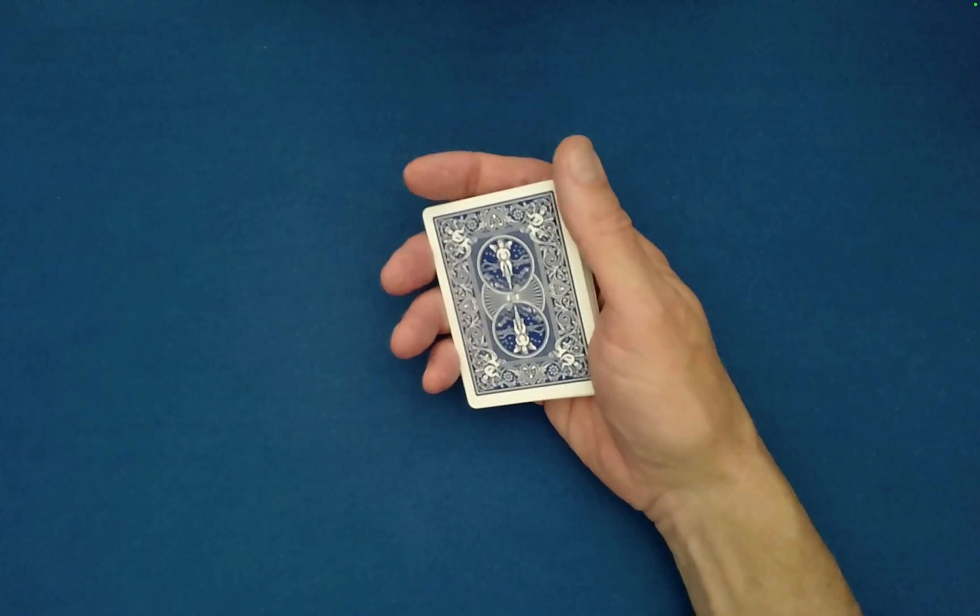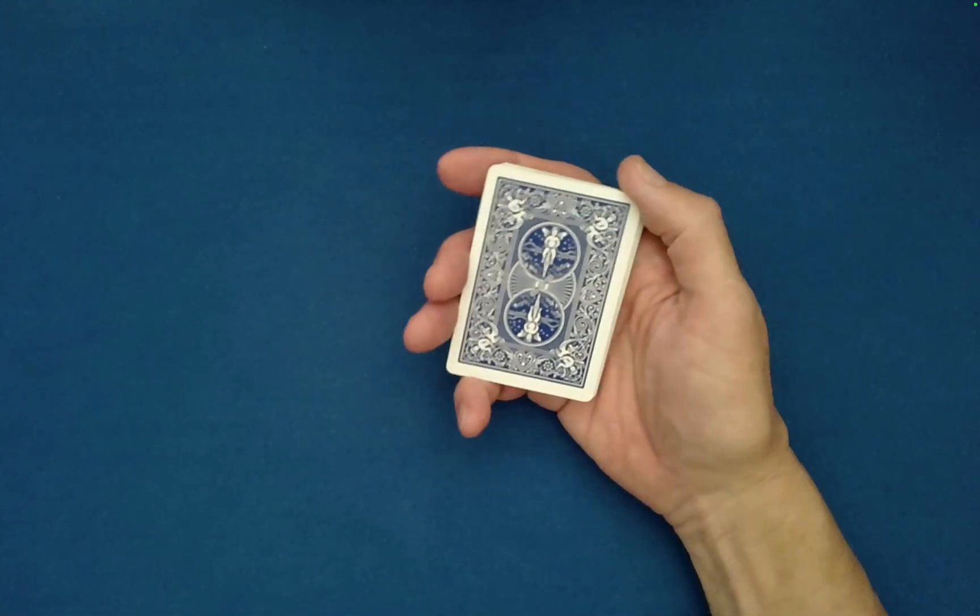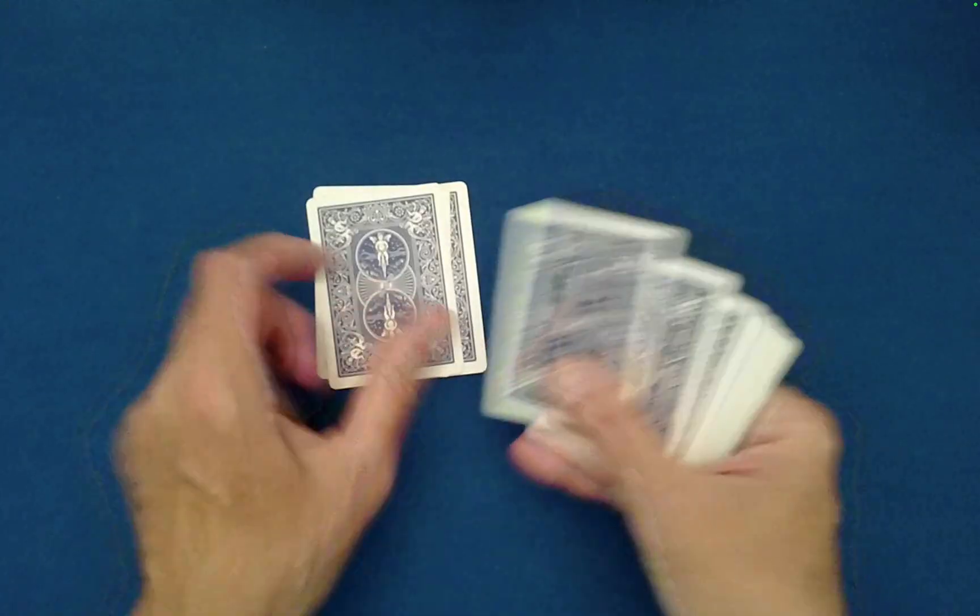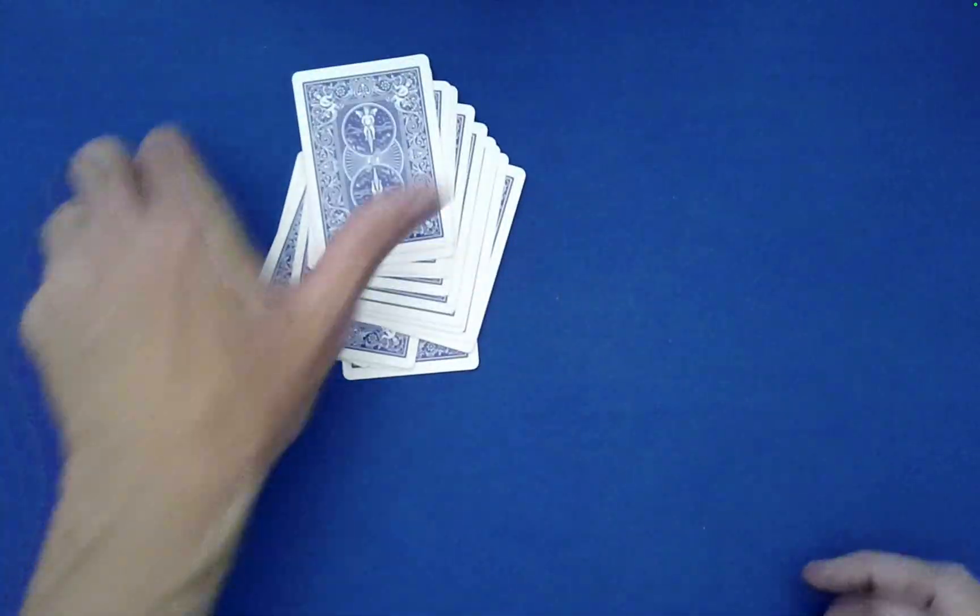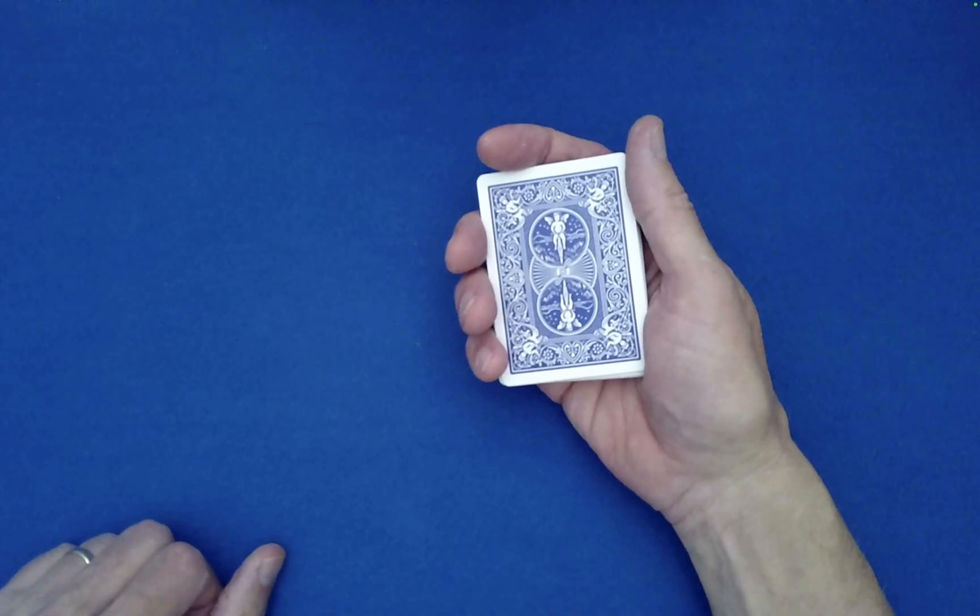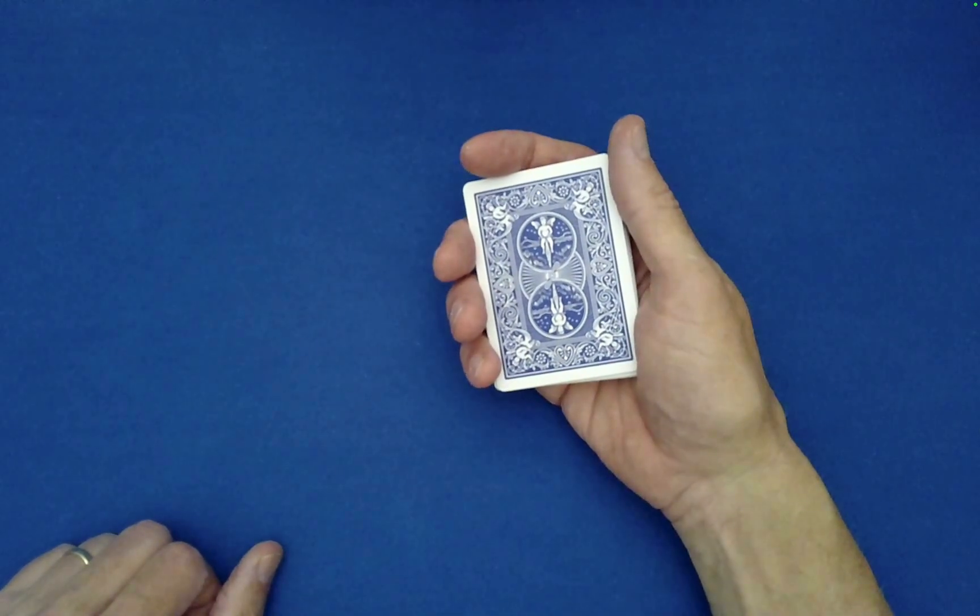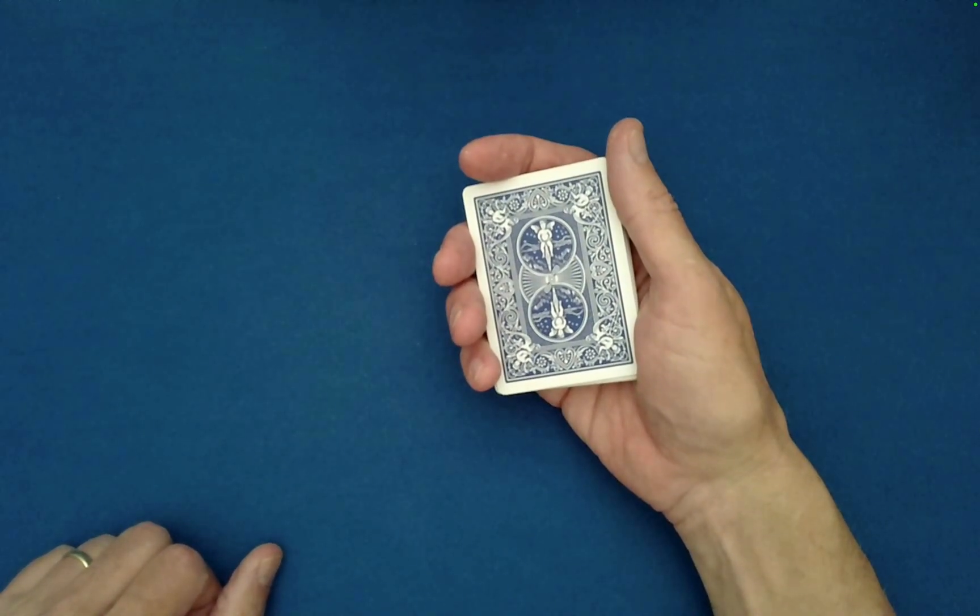And now we need to personalize this effect or this test by inputting your first name which is Robert. R-O-B-E-R-T Robert. Okay very good. We are ready to begin the lie detection phase.